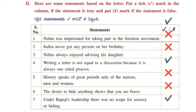Let's move on to the second roman. Here some statements are given. We have to put right or wrong according to the statement. First: Nehru was in prison for taking part in the freedom movement — True. Next: Indira never got any present on her birthday — False. Next: Nehru always enjoyed advising his daughter — False. Next: Writing a letter is not equal to a discussion because it is always a one-sided process — True. Next: History speaks of great periods only of the nation's men and women — False. Next: The desire to hide anything shows that you are brave — False. Last: Under Bapuji's leadership, there was no scope for secrecy or hiding — True.